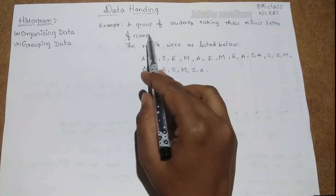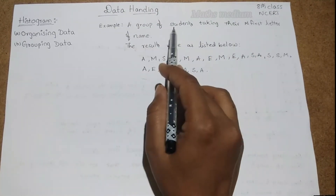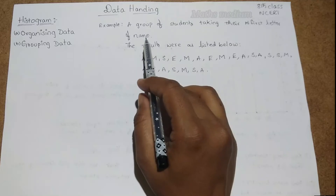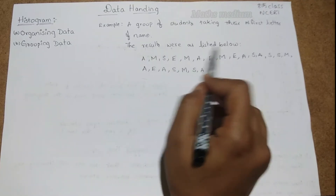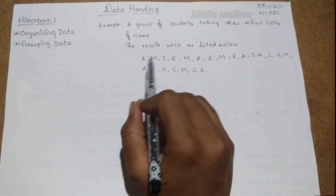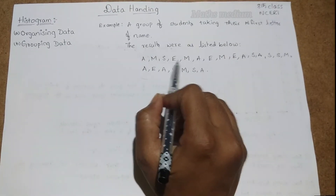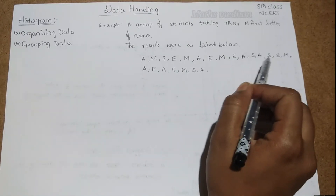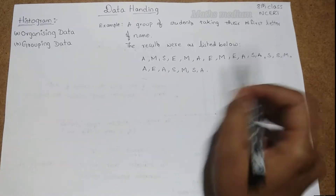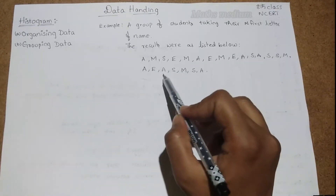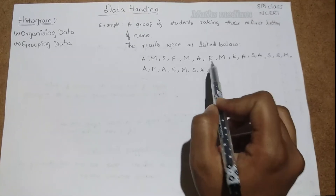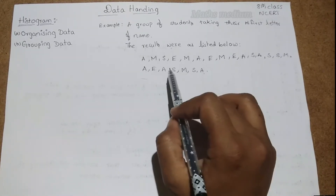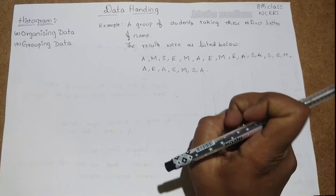A group of students takes the first letter of their name. The results were as listed below: A, M, S, E, M, A, E, M, E, A, S, A, S, S, M, A, E, A, S, M, S, A. This is the grouping of the data — we are collecting data from the students according to the question.